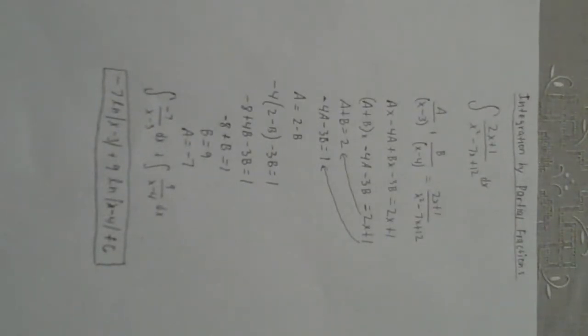Integration by Partial Fractions. We have the integration of 2x plus 1 over x squared minus 7x plus 12 dx.